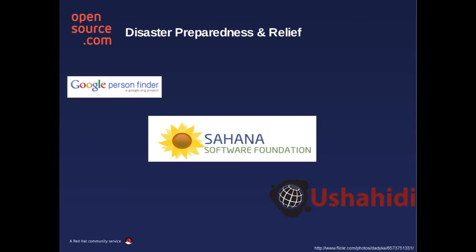The result was Sahana, a disaster management platform, but there are many other software codebases in this area. How many of you folks survived the recent snowpocalypses on the East Coast? Ushahidi is actually a crowdsource mapping tool which was used to help folks know to go and shovel their neighbor's driveway if they needed assistance.